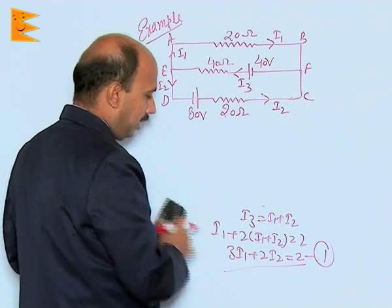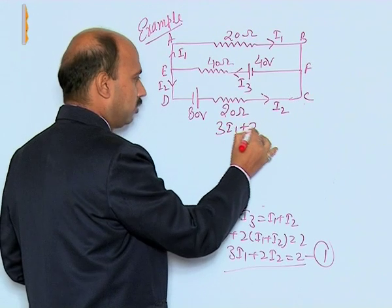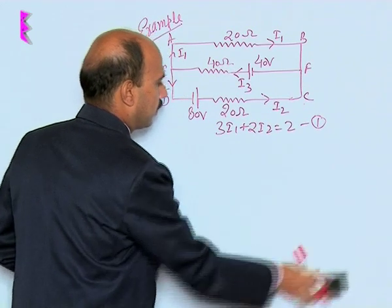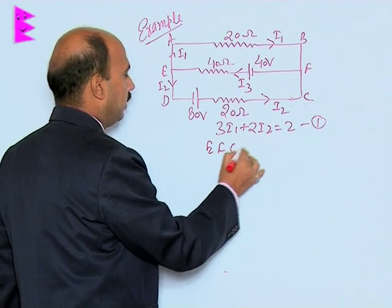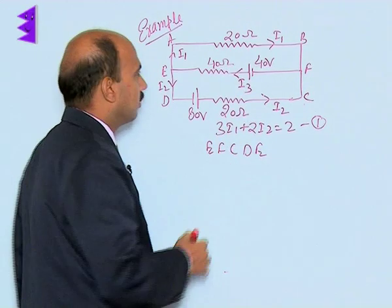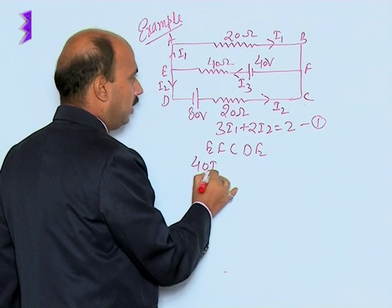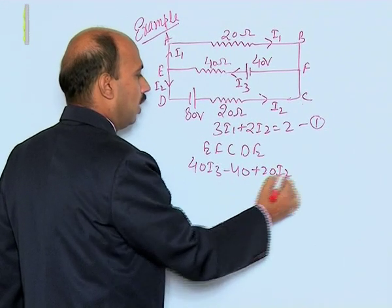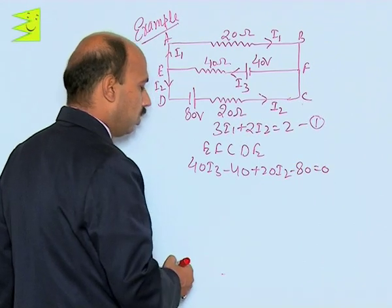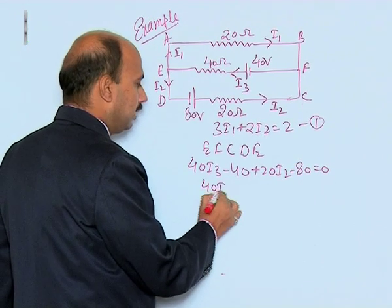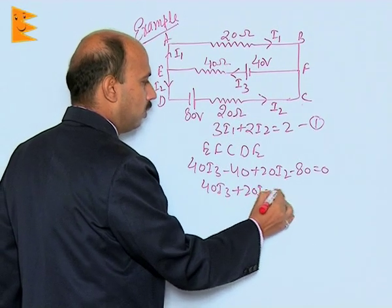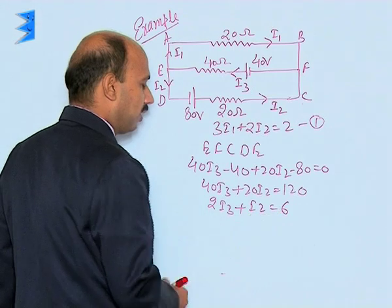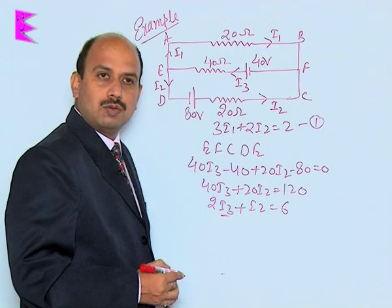The first equation I am writing here: thrice of I1 plus twice of I2 is equal to 2, this is the first one. Now I am going to the loop E F C D E, that is also clockwise. When we go E to F, we can write 40 I3 minus 40. C to D we can write plus 20 I2 is equal to 120. Here we can write twice of I3 plus I2 is equal to 6, then we can put the value of I3 equal to I1 plus I2.